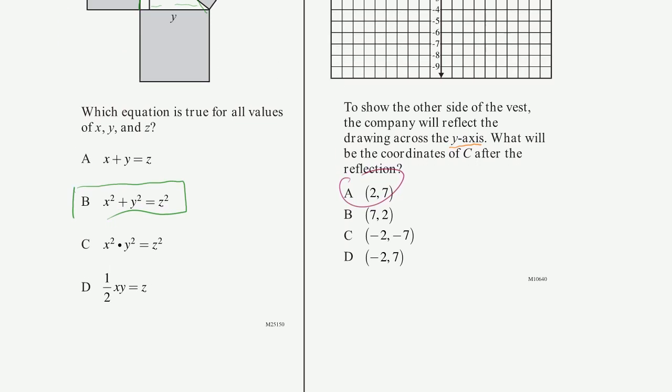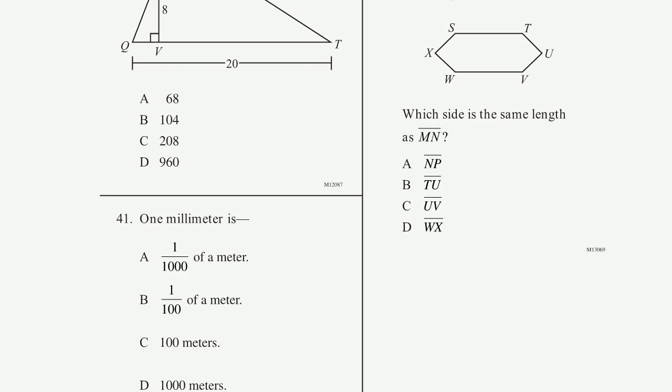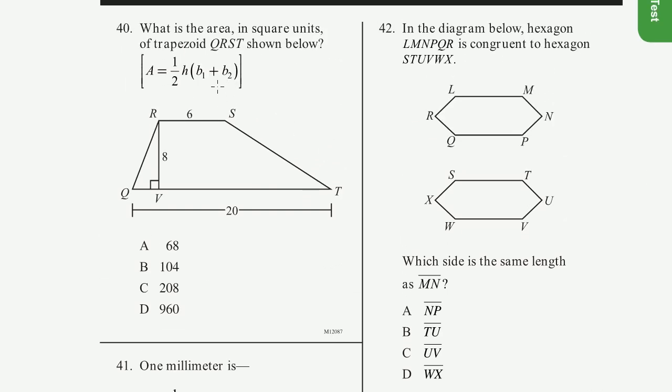And let's, well, I'll do the next video. Well, I mean, there's only two problems in this video. So let me go to the next page, number 40. What is the area in square units of trapezoid QRST shown below? So we need to figure out the area of this.